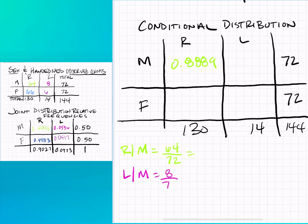And then I wrote L and then a straight line M, and that's read as left-handed given that they're male. Again that's our condition, and so we have 8 as our observed count and then 72 is our denominator because that's our total for the row. So it stands to reason that those two values should sum to one because they're making up that row, and they do.